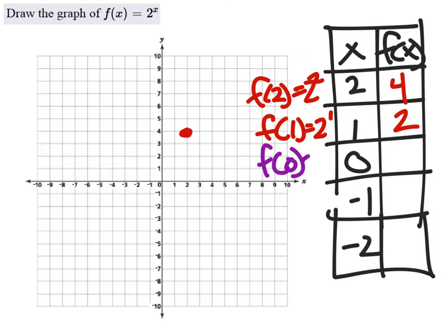f of 0 is 2 to the power of 0, which is 1. I should have graphed that last one right there.